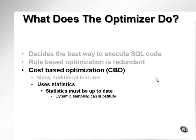The cost-based optimizer uses statistics which must be up to date, and dynamic sampling can be quite an effective substitute for either out-of-date or nonexistent statistics.